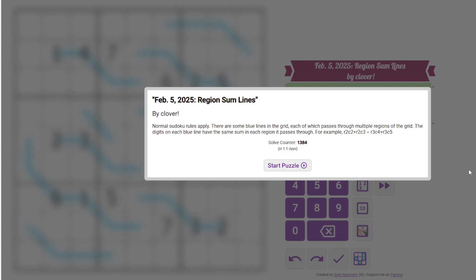Hi everyone, this is the Gas walkthrough for February 5th. I'm Philip Newman. Today I'm solving region sum lines by Clover. Clover and Bill swapped the past couple of days, so solving a Clover puzzle, which doesn't happen as often.